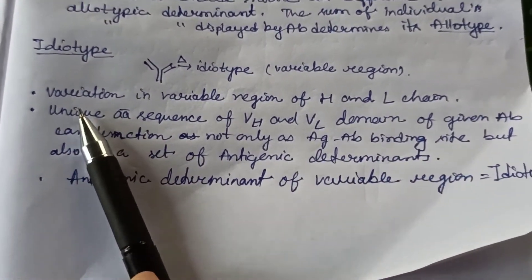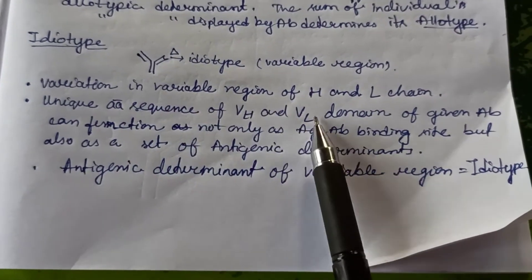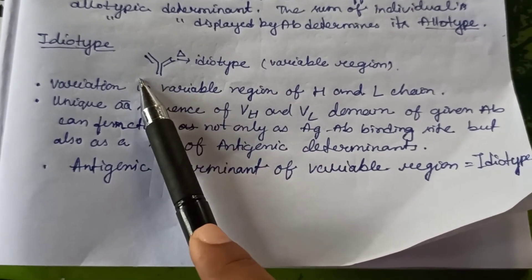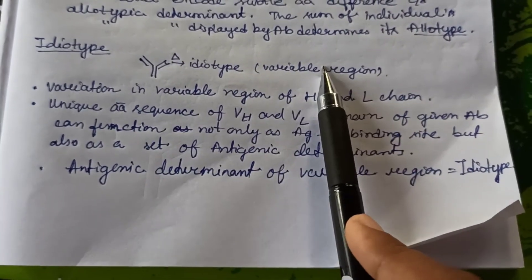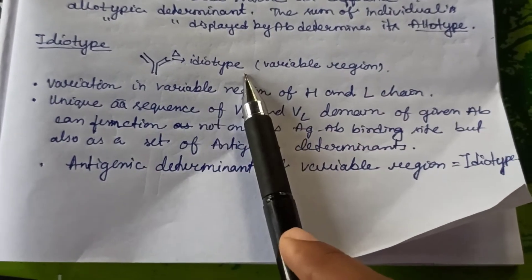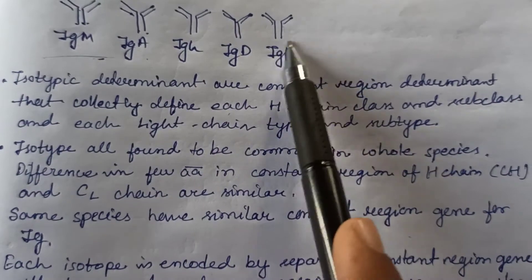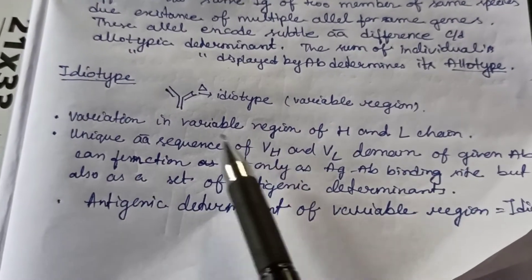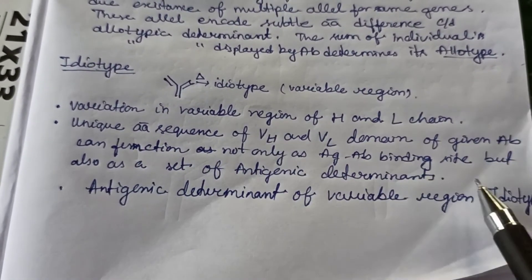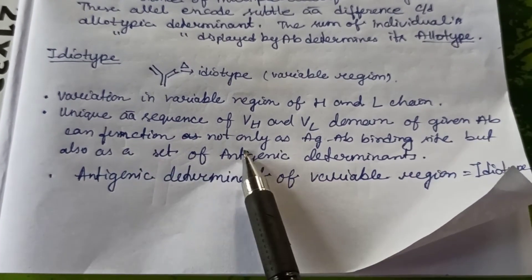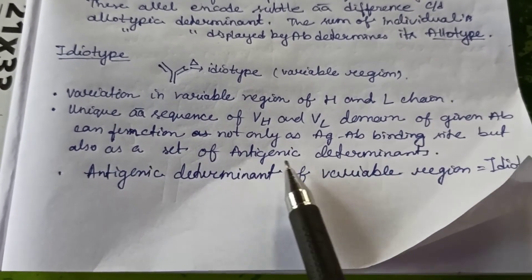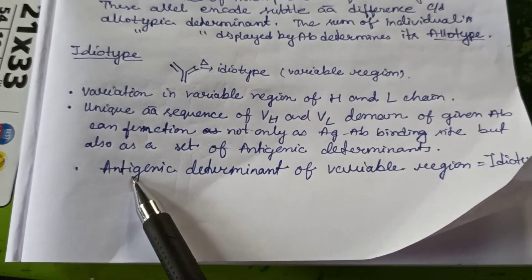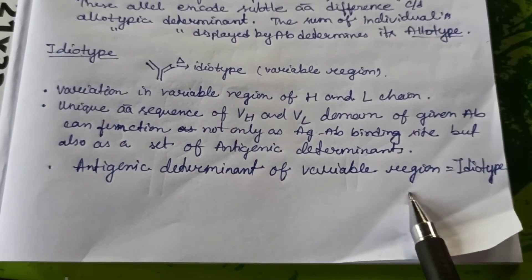In idiotype, we study the antigenic determinant of the variable region — the variation in the variable region of the heavy and light chains. Every isotype has unique amino acids in its variable regions. These variable regions not only function as the antigen-antibody binding site, but also function as an antigenic determinant — known as the idiotypic determinant.